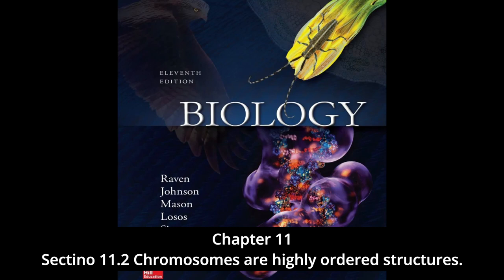The structure of eukaryotic chromosomes: in the centuries since the discovery of chromosomes, we have learned a great deal about their structure and composition. Chromosomes are composed of chromatin, a complex of DNA and protein — most are about 40% DNA and 60% protein. A significant amount of RNA is also associated with chromosomes, because chromosomes are the sites of RNA synthesis. The DNA of a chromosome is one very long double-stranded fiber that extends unbroken through the entire length of the chromosome.